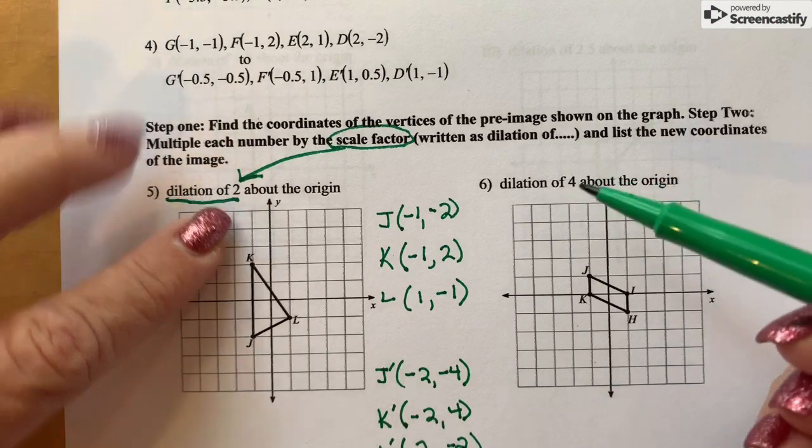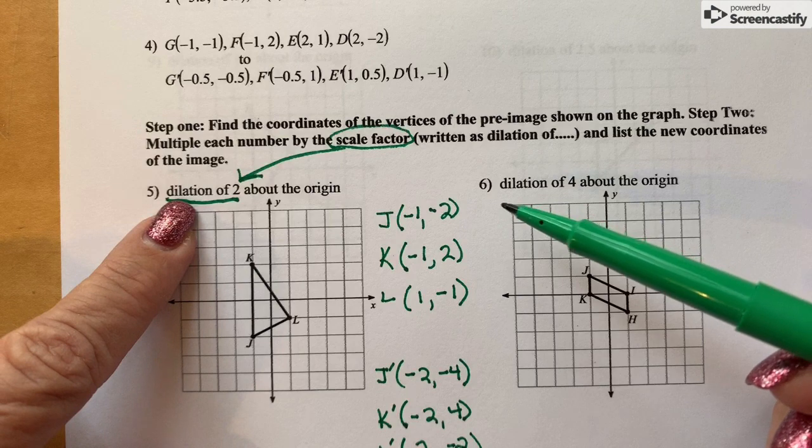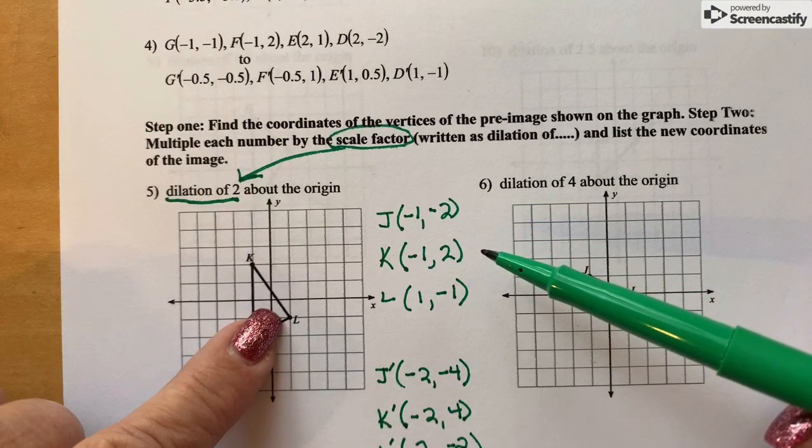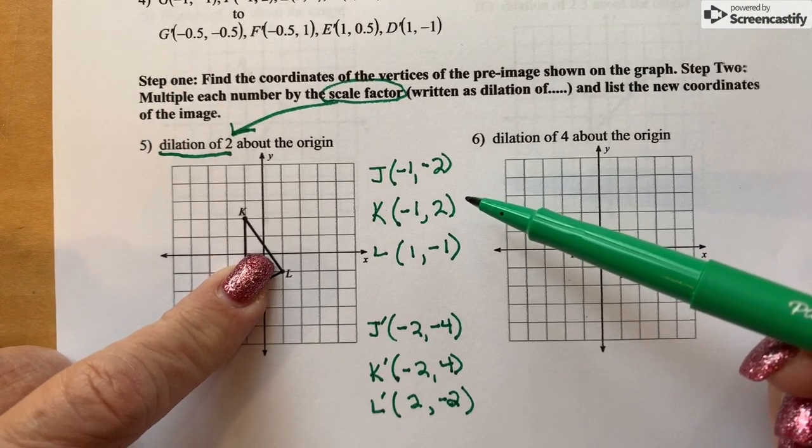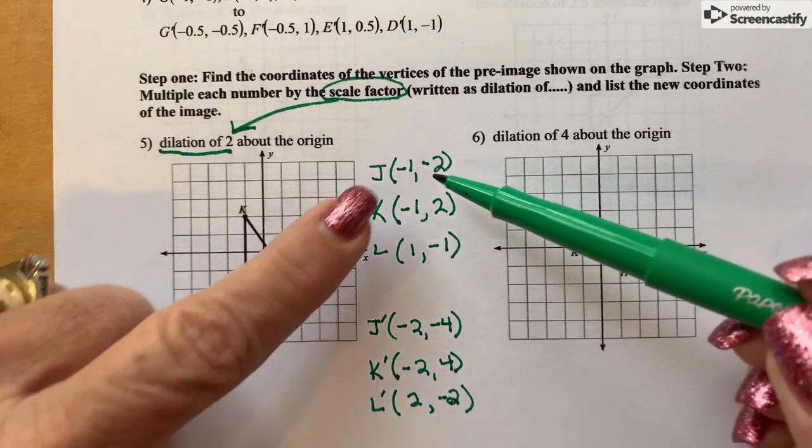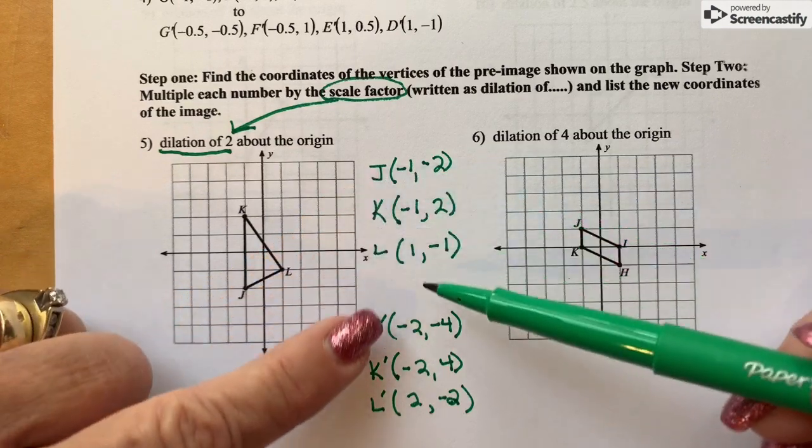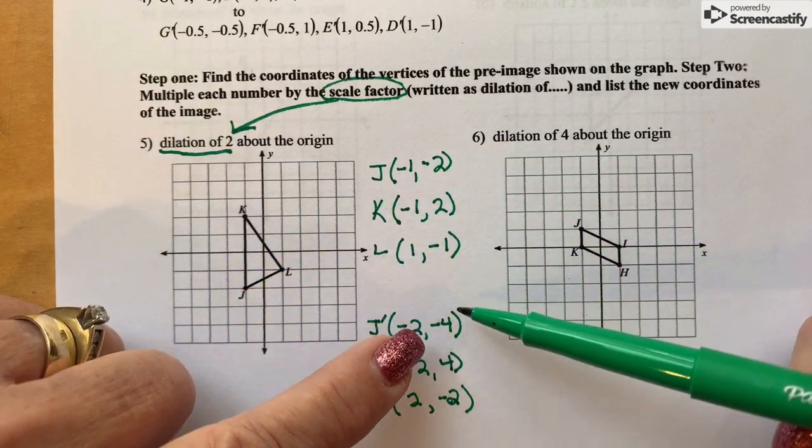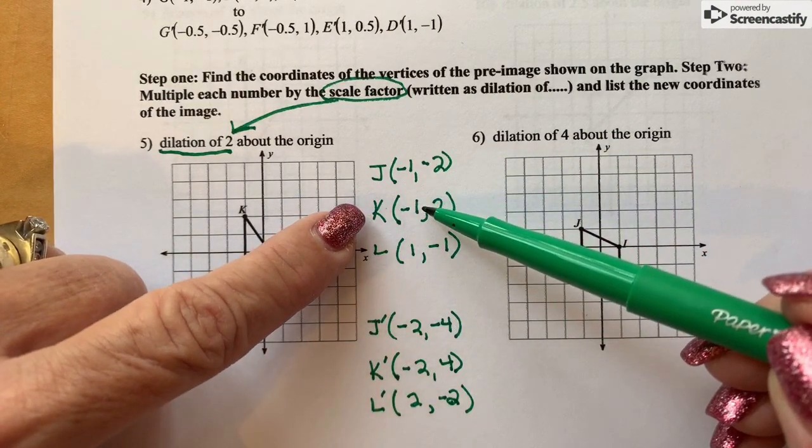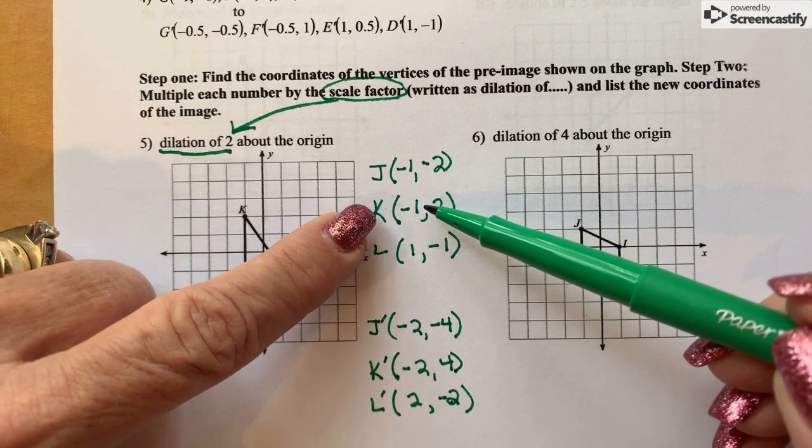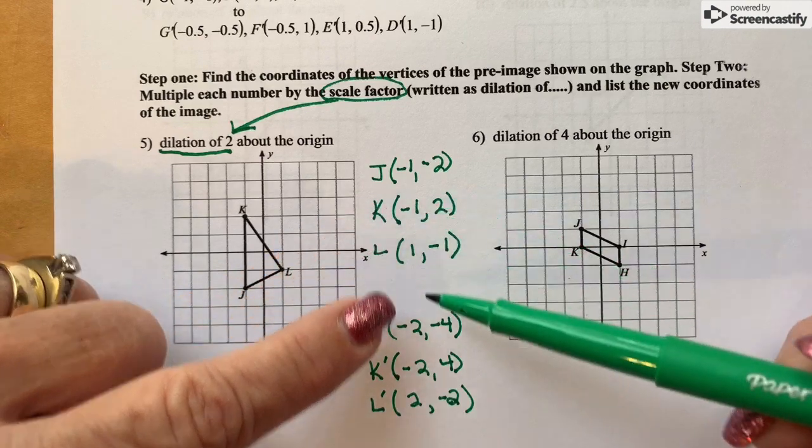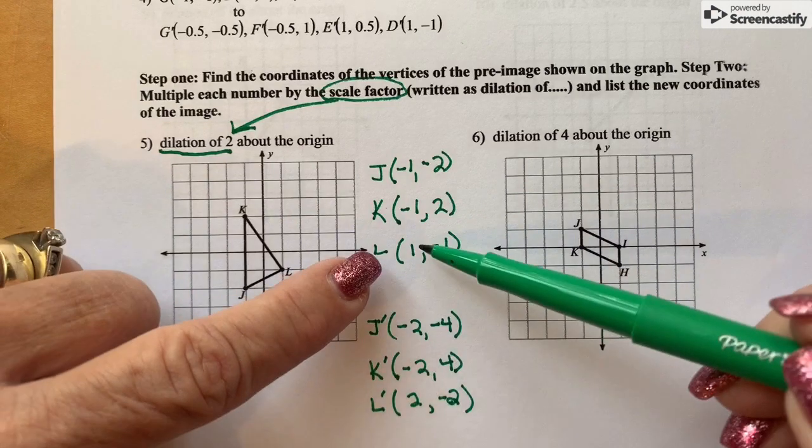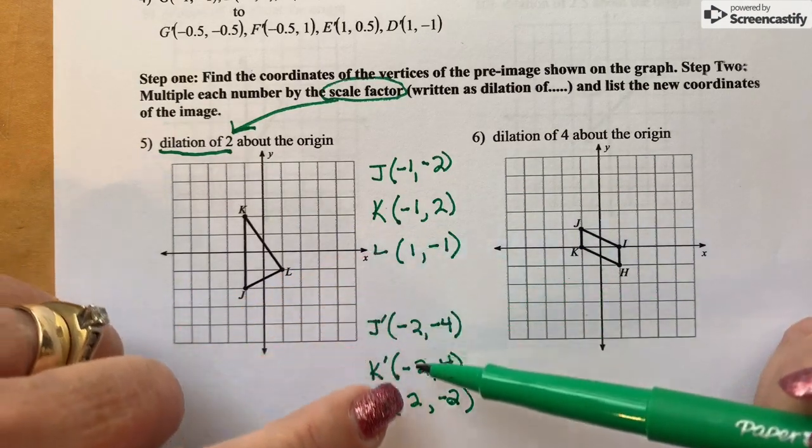All right, so let me go over that again. Using the scale factor of 2, I found all of the coordinates of the points on this figure on the coordinate plane. Then using the scale factor of 2, we multiply negative 1 by 2 we get negative 2, we multiply negative 2 by 2 we get negative 4. The coordinates of K: negative 1 multiplied by 2 I get negative 2.